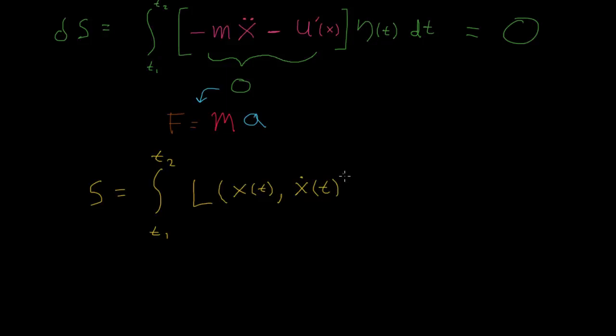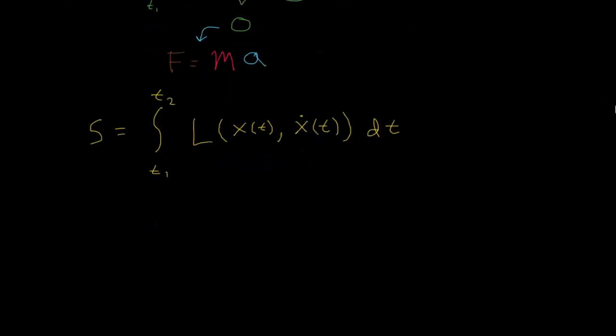So L is a function of both of these things, and we're integrating over the variable t. This function here is called the Lagrangian. In our problems in physics, it will actually be the kinetic energy, which is a function of the derivative of the position, minus the potential energy, which is a function of the position.